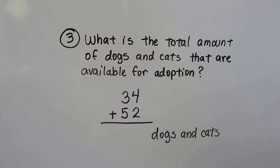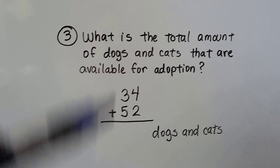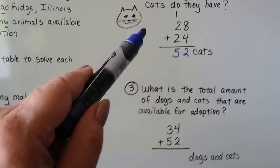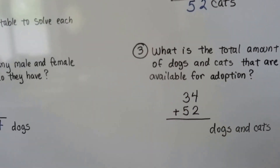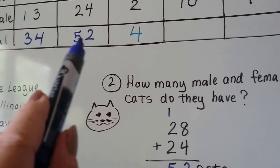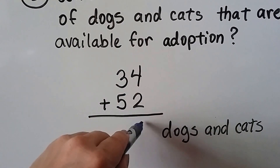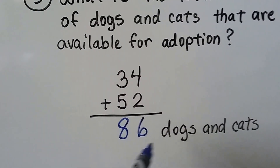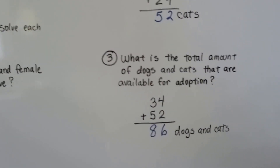Number three asks: what is the total amount of dogs and cats available for adoption? We can use the numbers we just found — the sums from problems one and two. We take our 34 dogs and our 52 cats and add them together. Four plus two is six for the ones place, and five plus three is eight for the tens place. There are 86 dogs and cats. We labeled dogs here and cats here.